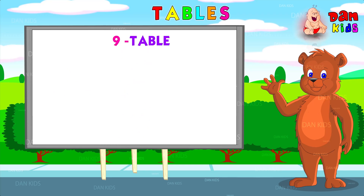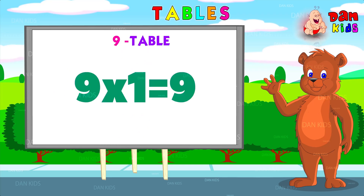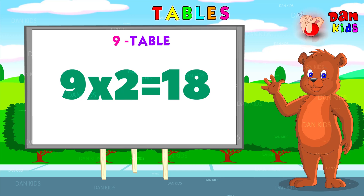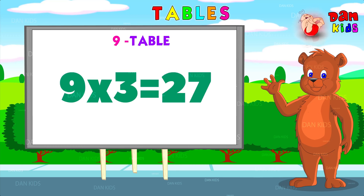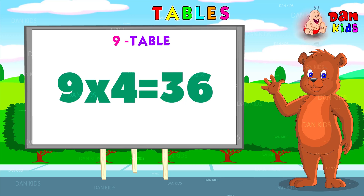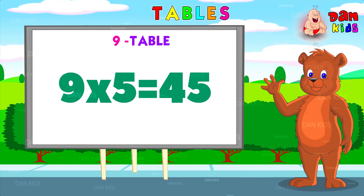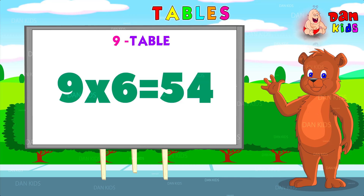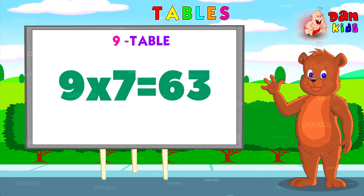Now the ninth table. Nine ones are nine. Nine twos are eighteen. Nine threes are twenty-seven. Nine fours are thirty-six. Nine fives are forty-five. Nine sixes are fifty-four.